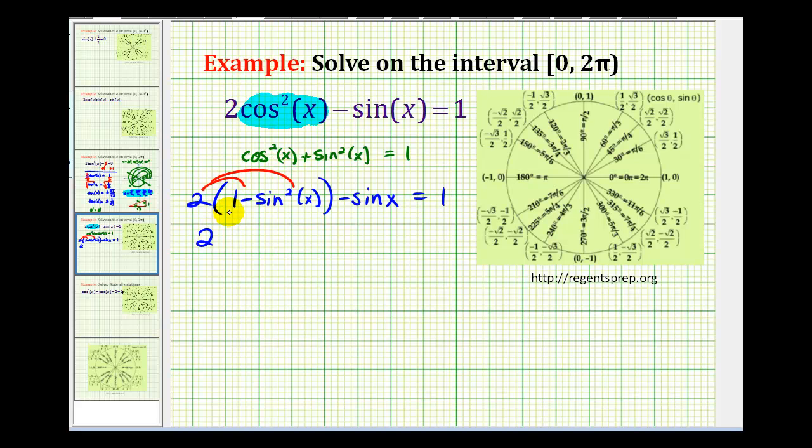So we'll have 2 - 2sin²(x) - sin(x) = 1. Now we can see this equation is in quadratic form. So we're going to set this equal to zero and see if it's factorable. So we'll subtract one on both sides.